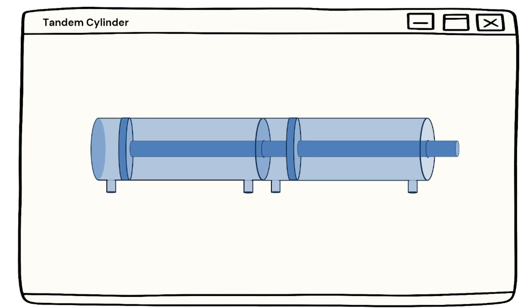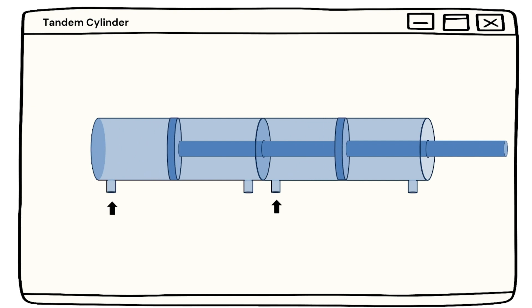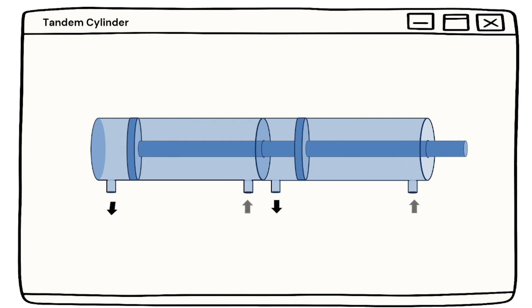Now the working of tandem cylinders. Firstly, the extension: when hydraulic fluid is supplied to the tandem cylinder, it extends. It exerts pressure on the piston inside each cylinder; this pressure causes the piston to extend outward, resulting in extension of the cylinder. The extension can be controlled and synchronized using valves and a control system. Now the retraction: to retract the tandem cylinder, the fluid pressure is released or reduced. This allows the internal spring or external force to retract the piston and consequently the cylinder. Retraction can be precisely controlled using fluid flow and pressure regulation.